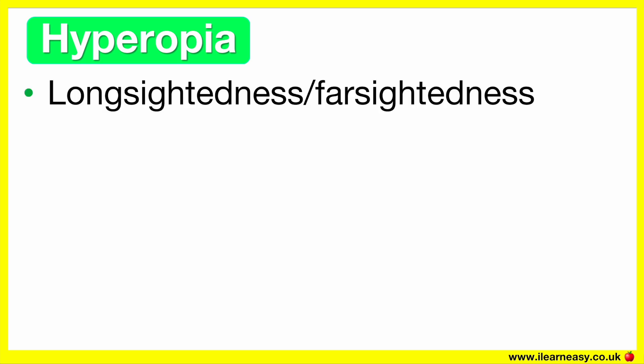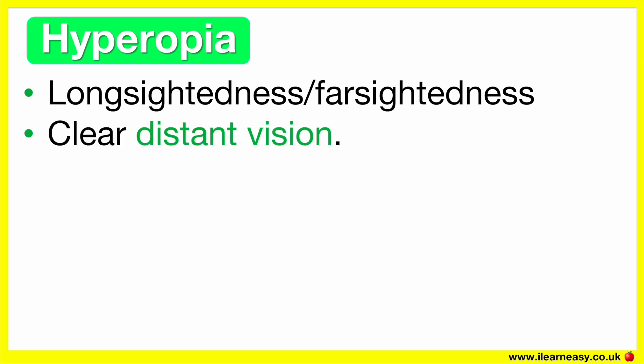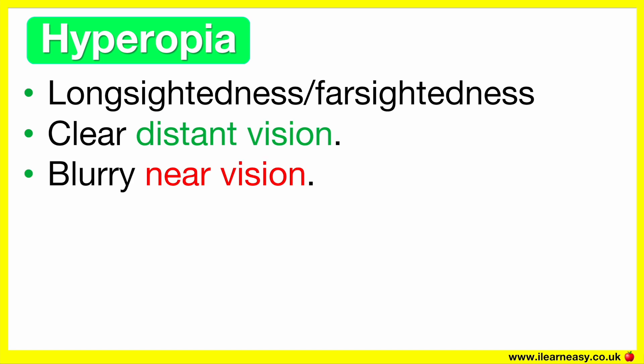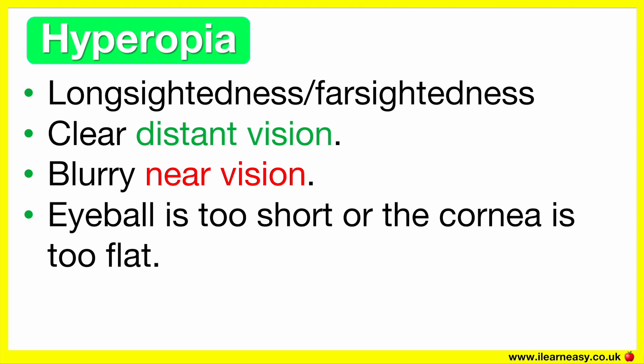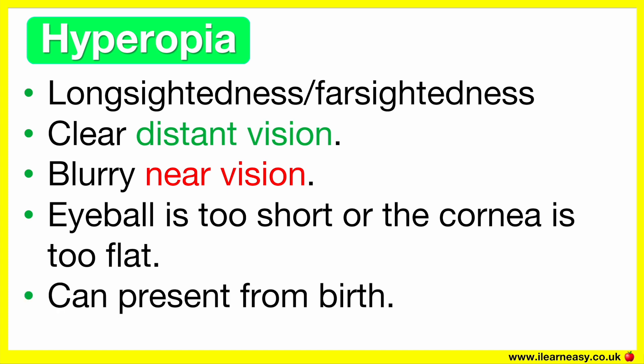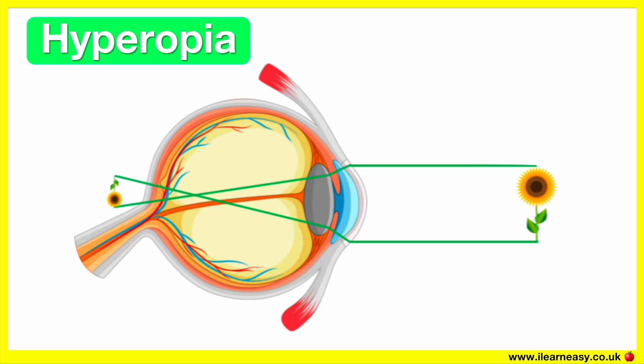Hyperopia is also known as long-sightedness or far-sightedness. In simple terms, it's when a person has clear distant vision, but their near vision is blurry. The cause of hyperopia is that the eyeball is too short or the cornea is too flat. This condition can present from birth, but often becomes noticeable later in life, especially when doing lots of close-up work like reading. With hyperopia, the light focuses behind the retina when looking at close objects, so close objects appear blurry, but distant objects appear clear.